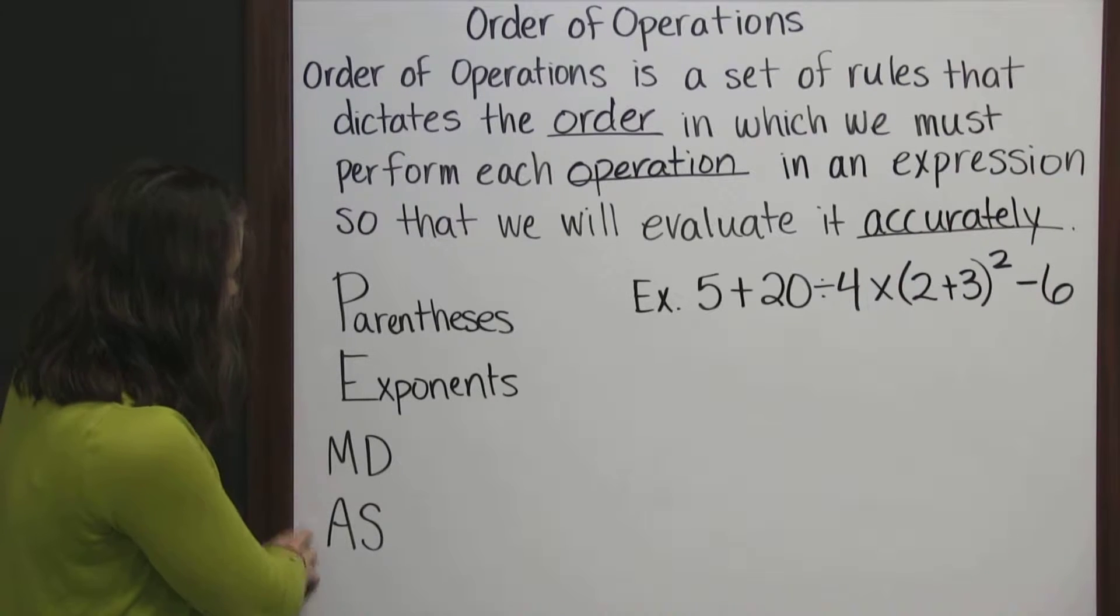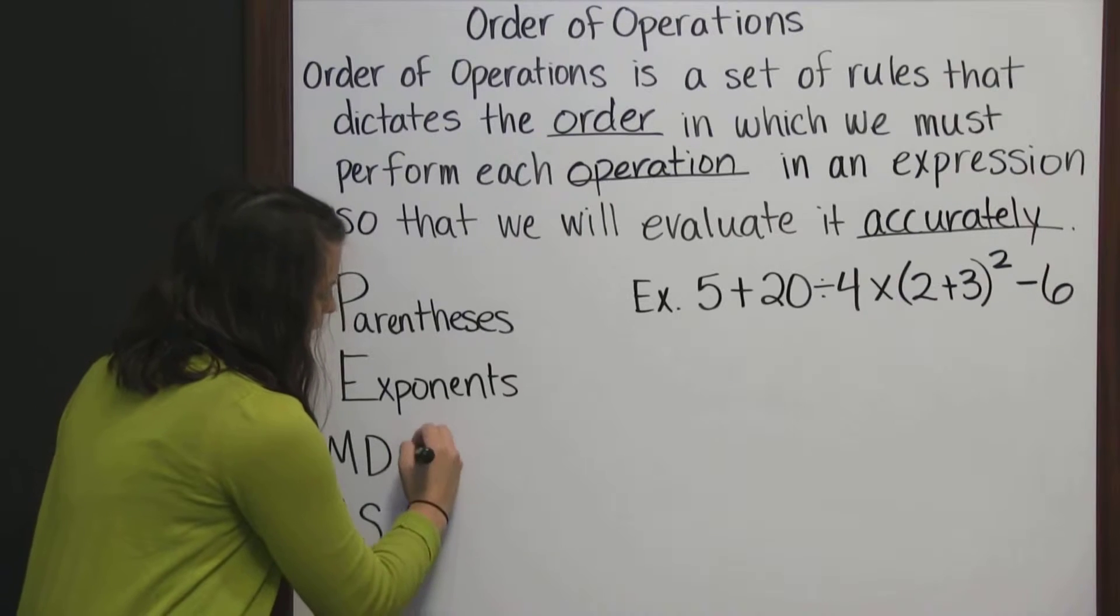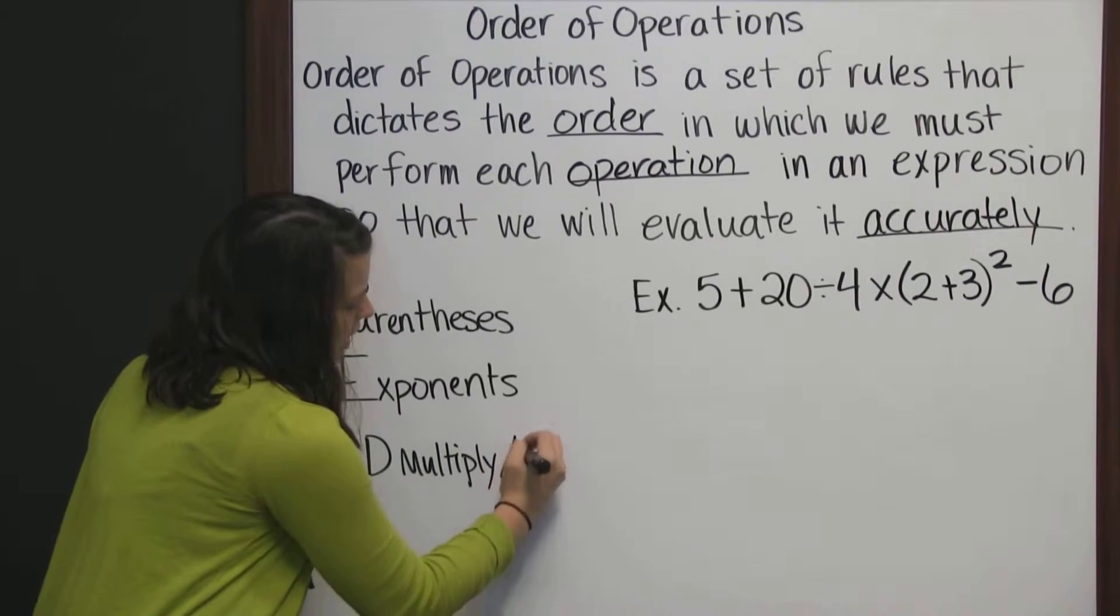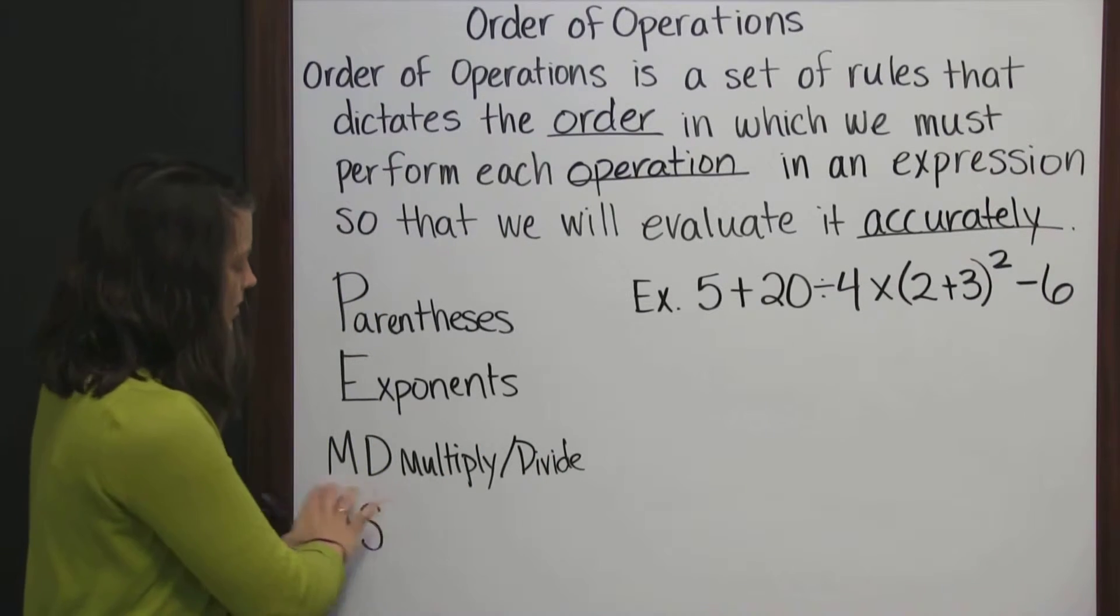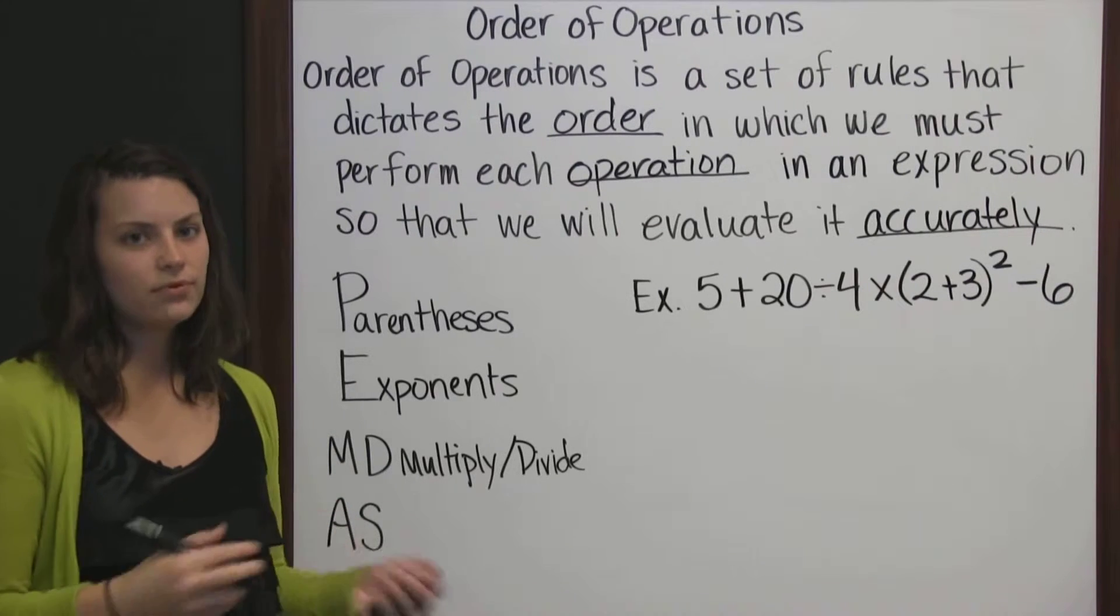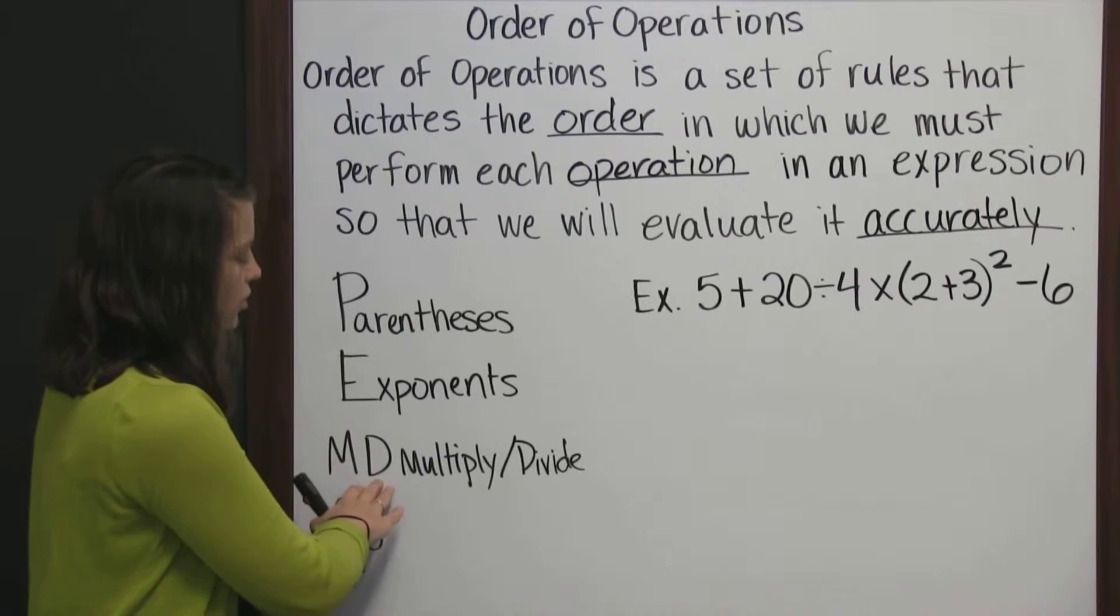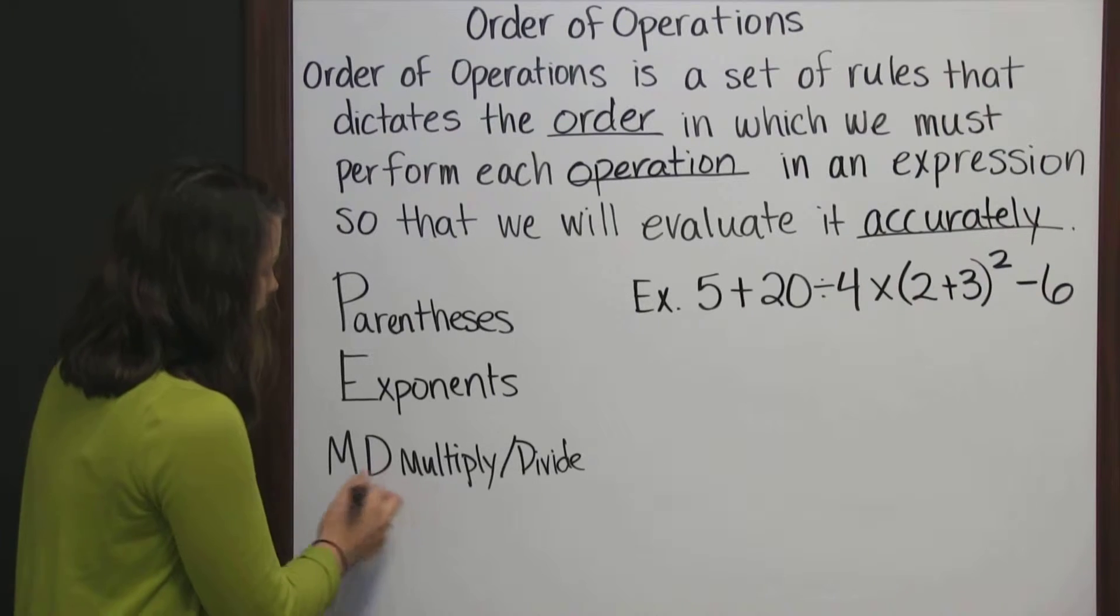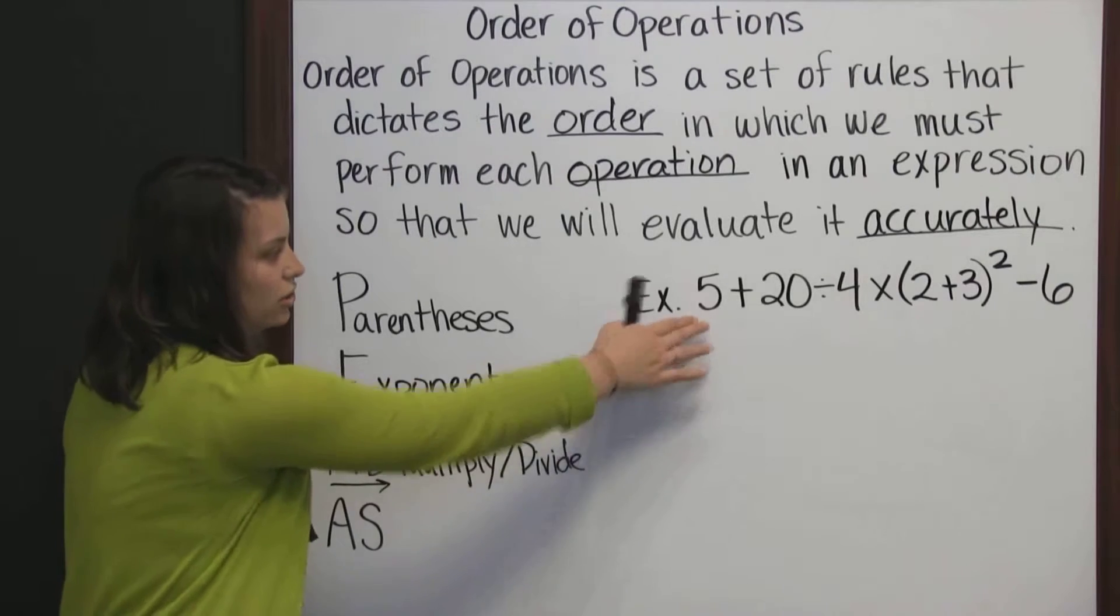Our last two sets are special. M and D is multiplication slash division. The reason they're on the same line together is that you don't do one before the other. It's not like you always multiply before you divide. What it really is, is you multiply and divide in order from left to right in your expression.